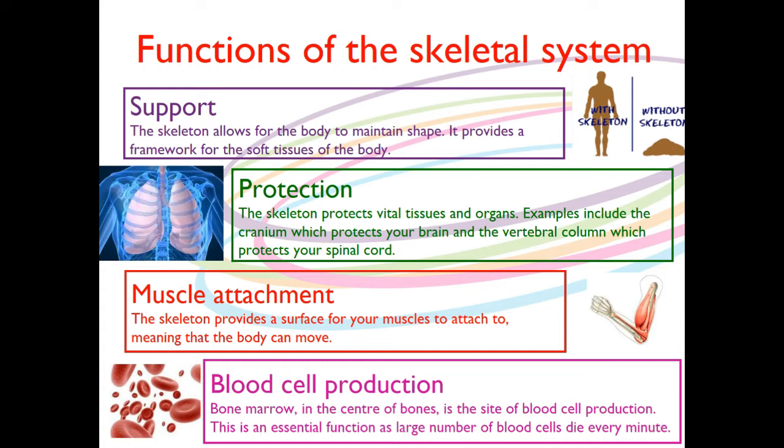The first one is about support. The skeleton allows the body to maintain shape — it provides a framework for the soft tissues of the body. What we're saying here is that our skeleton gives us our shape. So rather than being just a blob, like Peter Griffin on Family Guy when he has no bones, we are our walking, talking, standing humans as we are.